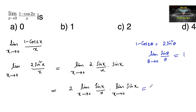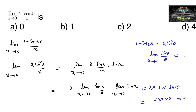So the answer is 2 times: limit x tends to 0 of (sinx / x) gives 1, and limit x tends to 0 of sinx is sin0 = 0. So 2 × 1 × 0 gives the answer 0. Option A is the answer.